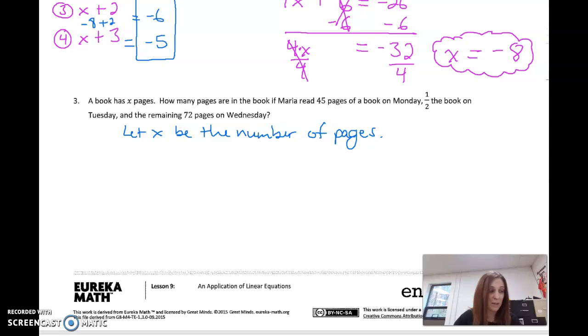So, how many days is she reading? She's reading on Monday, Tuesday, and Wednesday. So, they're trying to figure out how many pages are in the book. That's our goal. She read 45 pages on Monday. Don't overthink it. If it tells you 45 pages on Monday, you don't have to figure anything out. Half the book on Tuesday. Half of the book. Of. Multiply. Half of x. And the remaining 72 pages on Wednesday.